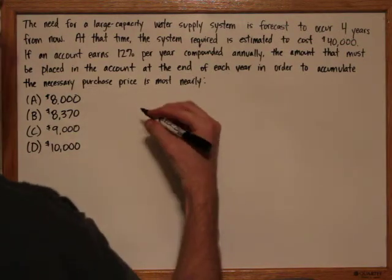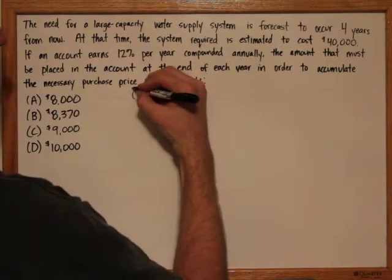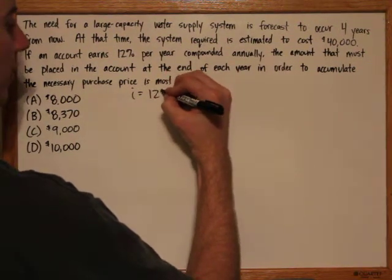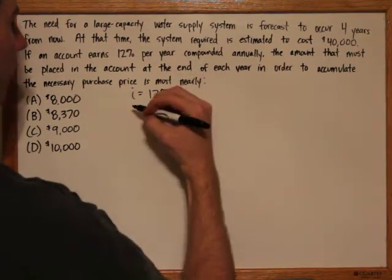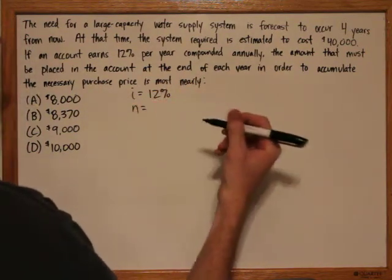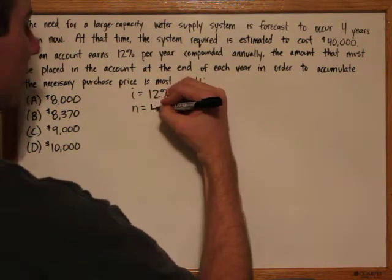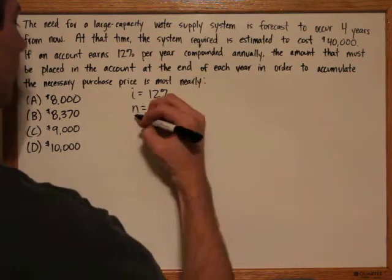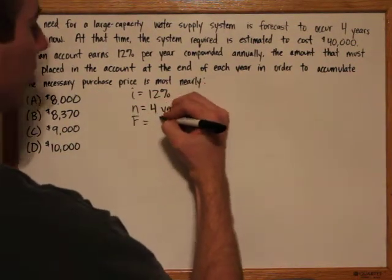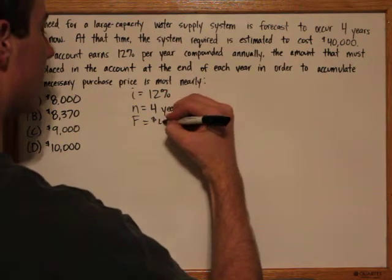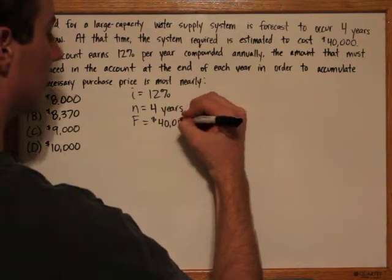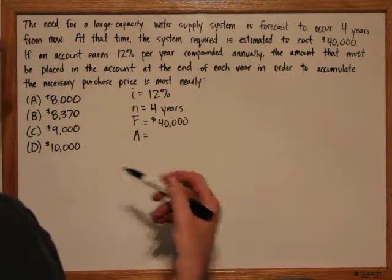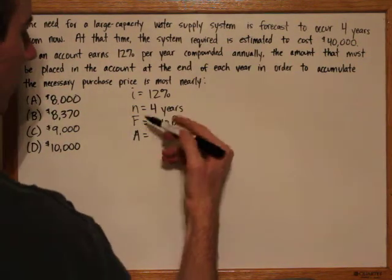So to solve this problem, let's write out what we know. First, i is the interest rate, and in this problem, that's 12%. Also, n is the length of time, and that is four years. f is our final amount, and in this problem, it's $40,000. And our unknown is a, which is the amount of each payment.